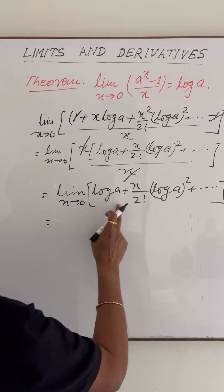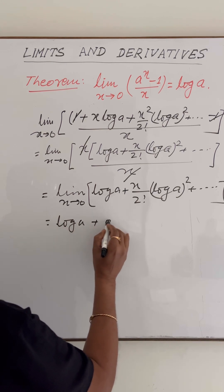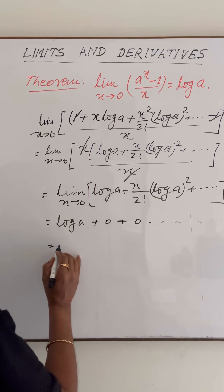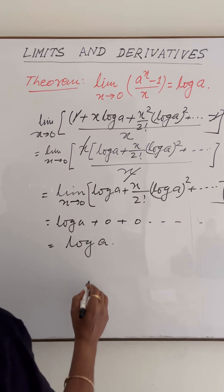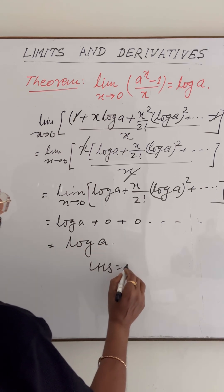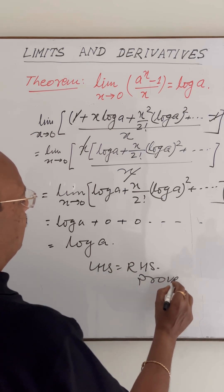Finally, we are getting the value equal to log a. So we are proving that LHS is equal to RHS. It has been proved.